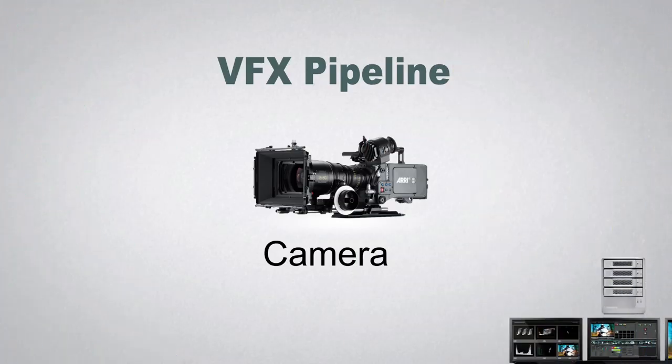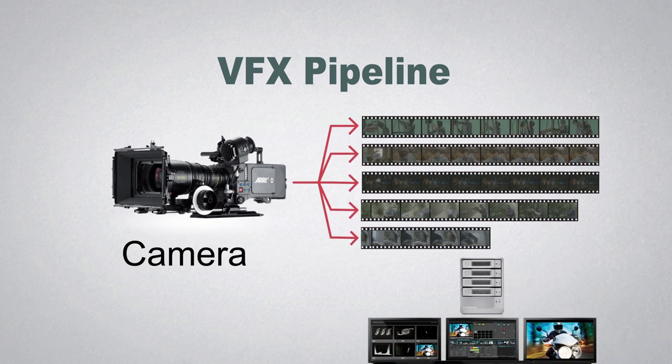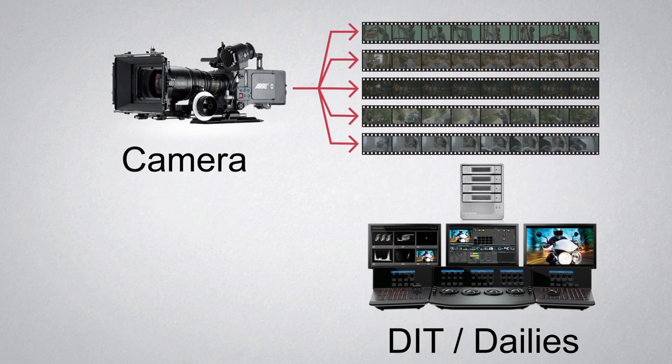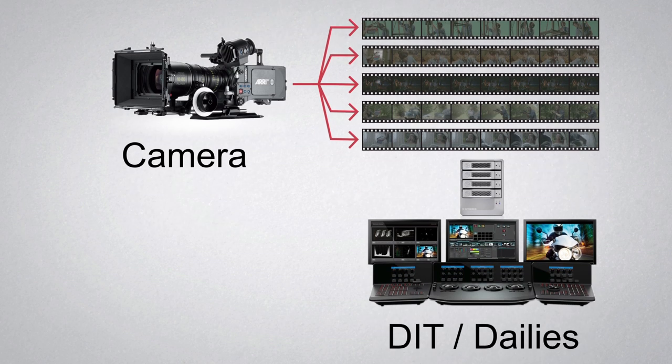Now let's look at a generic VFX pipeline and where CDLs and EDLs fit into that pipeline. Media is generated by the camera — in this case I'm using an Arri Alexa, but this can be any camera. The footage is then moved onto hard drive, verified, and often backed up onto another set of hard drives and even maybe an LTO. This first port of call for the footage is the DIT station, and often this person or facility will be creating dailies for review by the director, DOP, and editor, and also proxies so that the editor can start cutting as soon as possible.